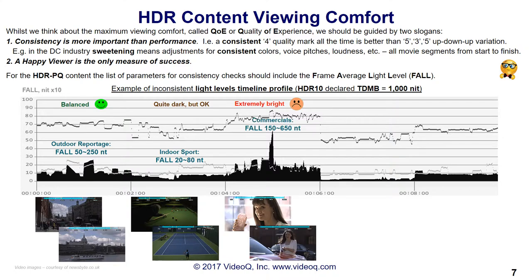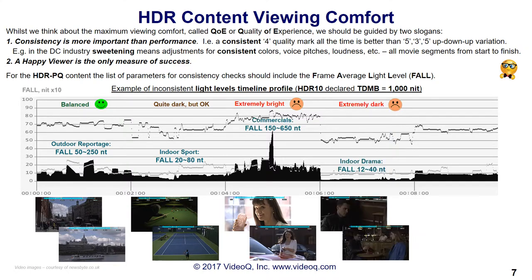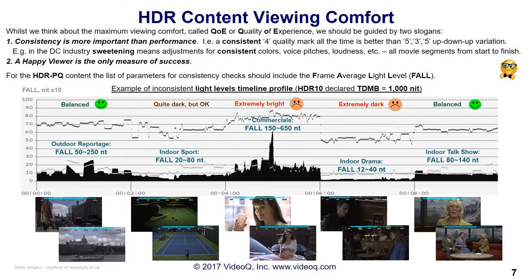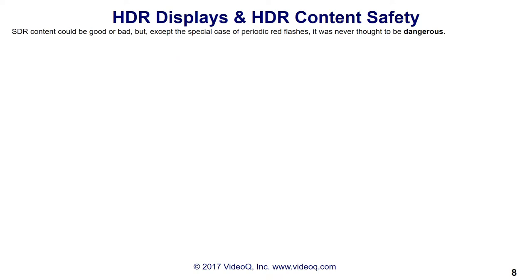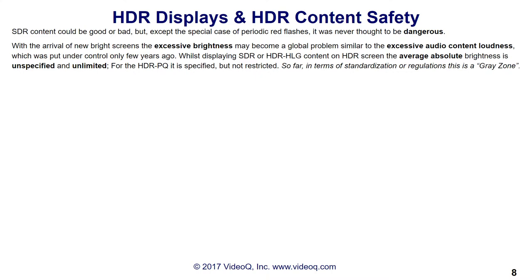For HDR PQ content, the list of parameters for consistency checks should include the segment's frame average light level, or FALL for short. This example shows that for HDR, an ad insertion may lead to average brightness conflicts much stronger than would have happened in SDR TV. SDR content could be good or bad, but except in the special case of red flashes, it was never thought to be dangerous.